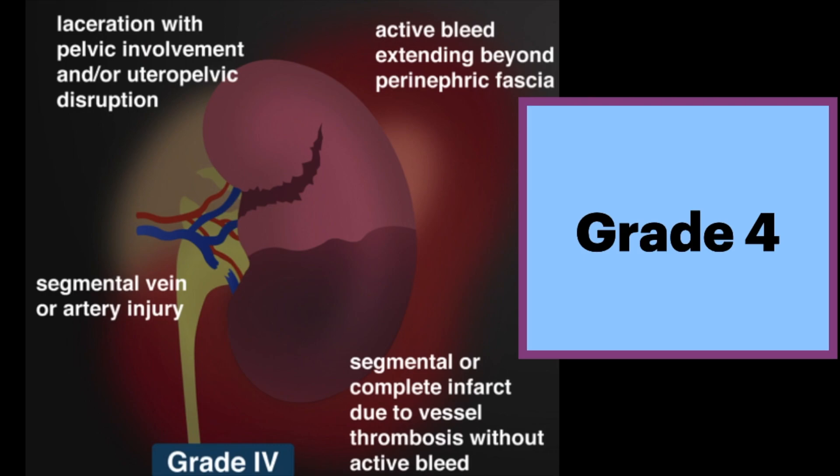A grade 4 injury is what we initially saw in this video. There is a laceration extending to involve the collecting system. Active bleeding may extend beyond the perinephric fascia. Segmental or complete infarct due to vessel thrombosis may be present, though without active bleeding. Devascularization results in no enhancement of the renal parenchyma. Persistent enhancement of the renal capsule, also known as the REM sign, may be due to small numerous collateral vessels that perforate through perinephric fat.